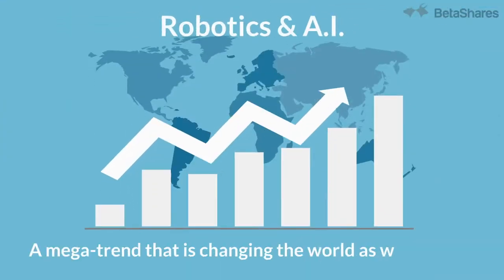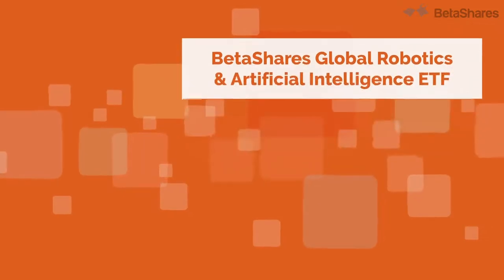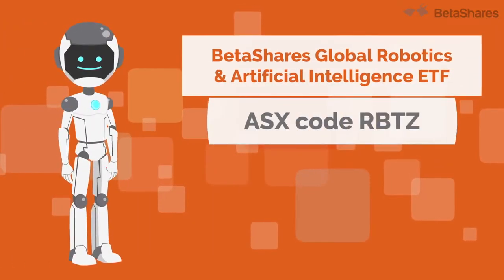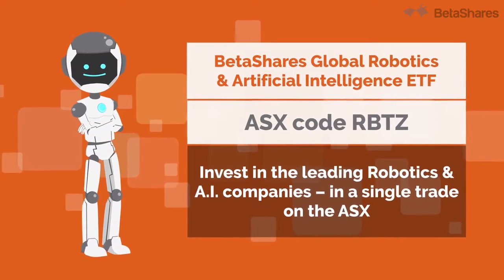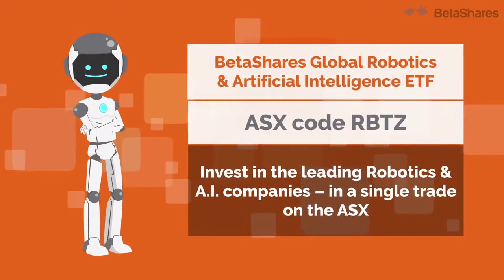Robotics and AI is a global megatrend that is literally changing the world as we know it. And now, with BetaShares Global Robotics and Artificial Intelligence ETF, you can invest in the leading robotics and AI companies via a single trade as easily as buying any share on the ASX using the ASX code RBTZ.